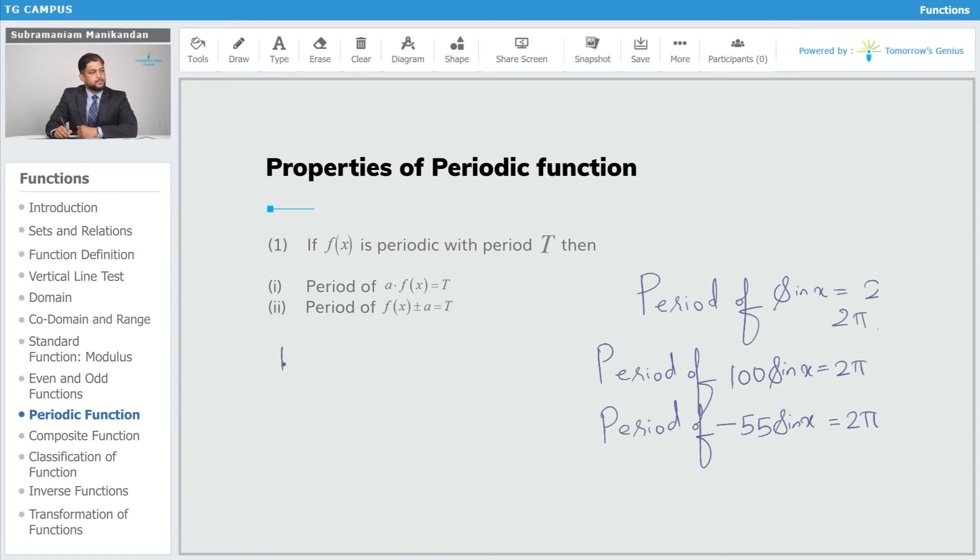Next, period of tan x is π. And so, period of tan x plus 10 is also π. Period of tan x minus 20 is also π. So, these are some simple examples of how property 1 works.